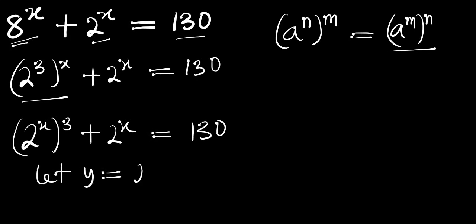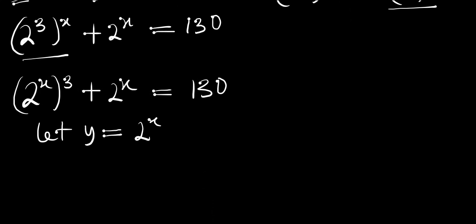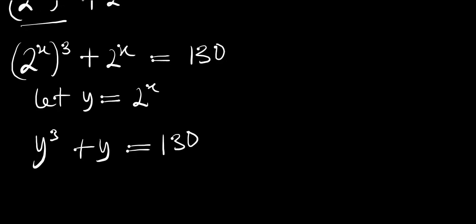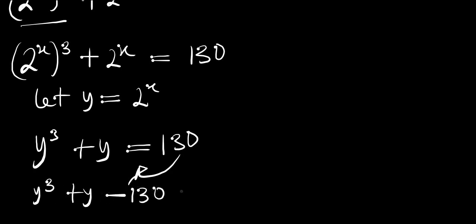Let y = 2^x. Then we have y³ + y = 130. Rearranging by moving the 130 over, we get y³ + y - 130 = 0.